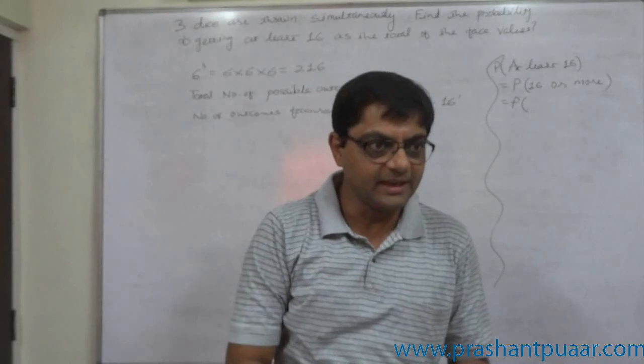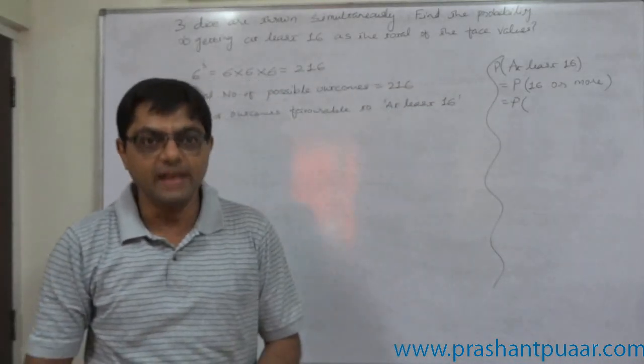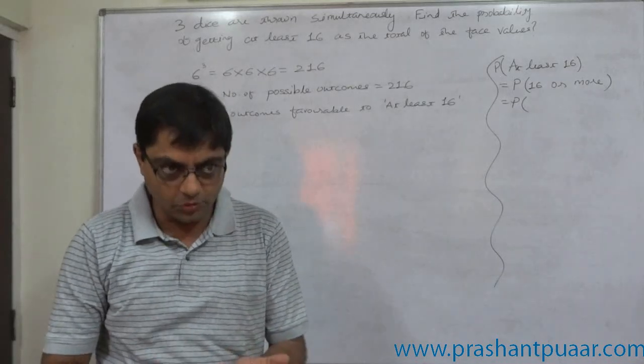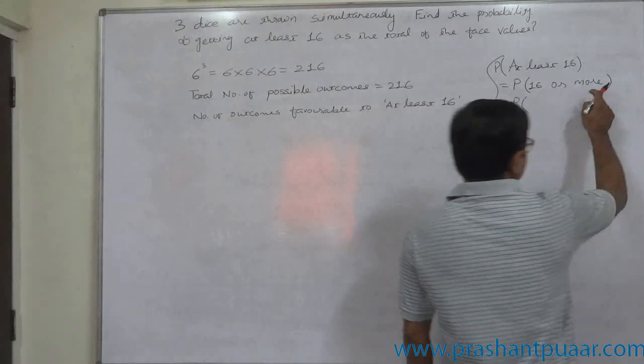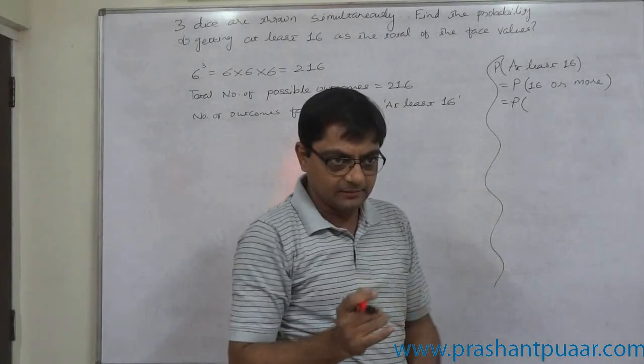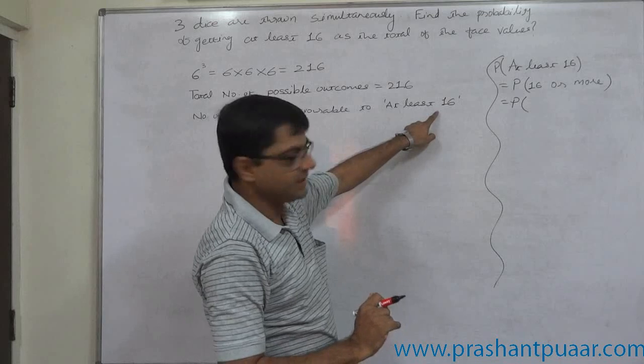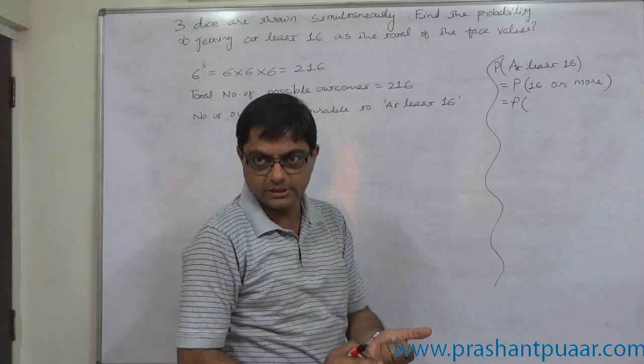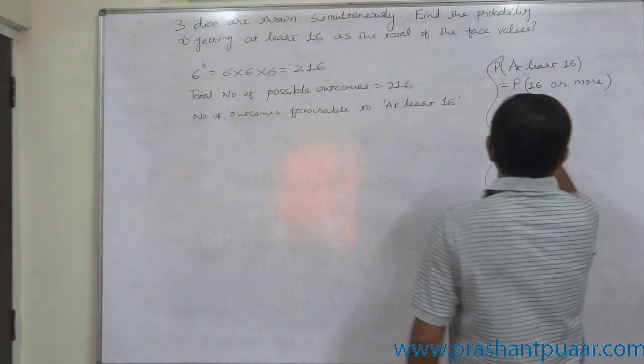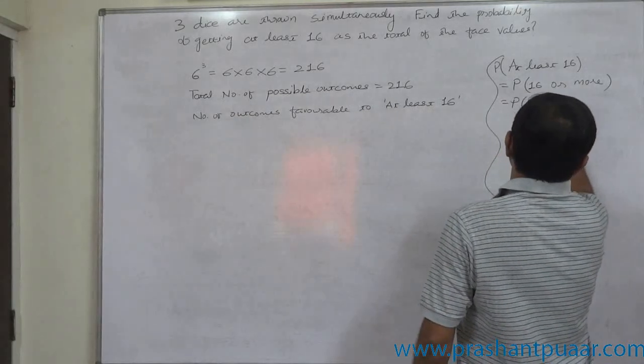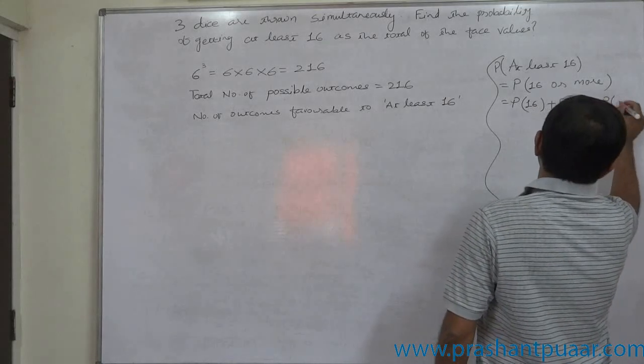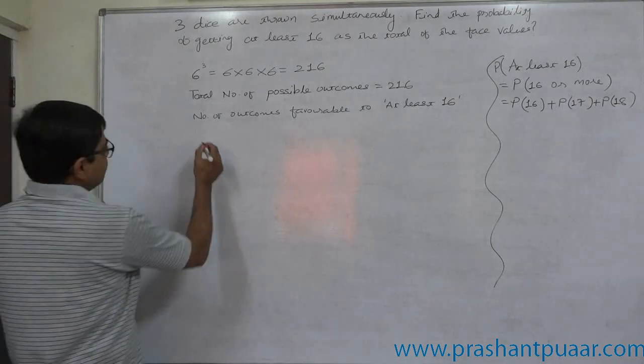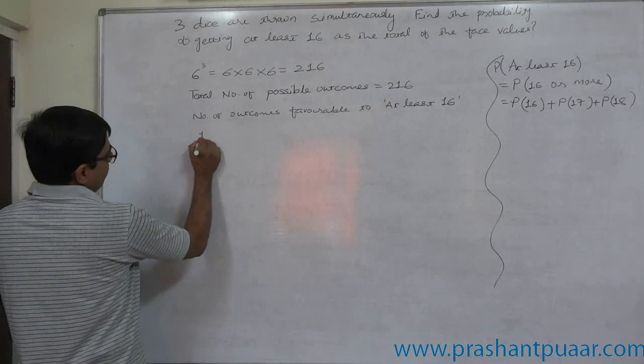Probability of 16 or more. First, what is the highest total possible when tossing 3 dice? It is 18: 6, 6, and 6 on all three dice. So the greatest possible total is 18, and the lowest total we're interested in is 16. It's the case of either 16, 17, or 18—probability of 16 plus probability of 17 plus probability of 18.